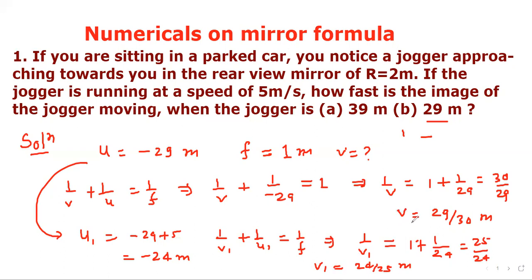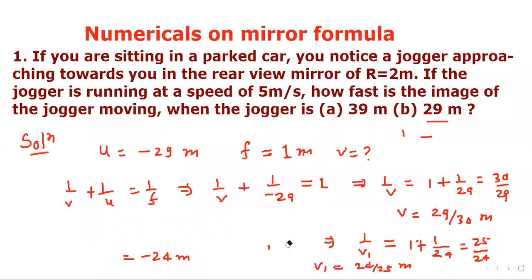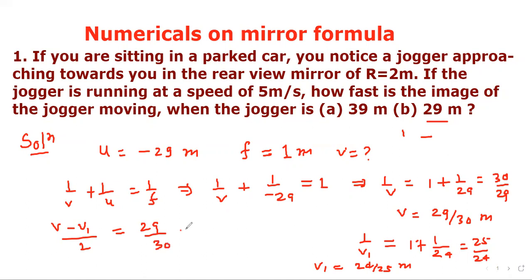The speed of the image is the difference of the two positions in one second: v − v1 = 29/30 − 24/25. Simplifying, this comes out to 1/150 meter per second. That completes part (b) of question one.